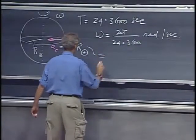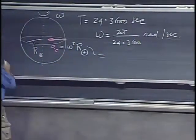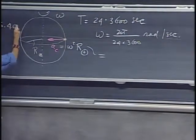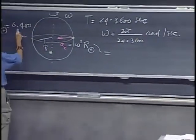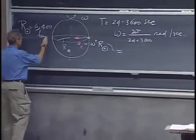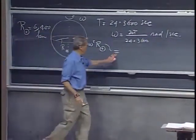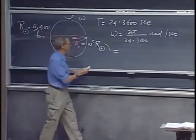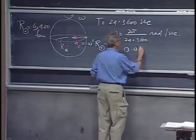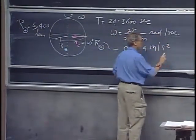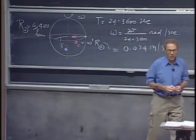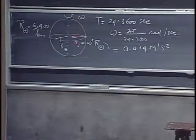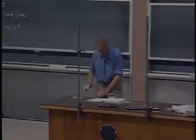You can now calculate omega squared times r_Earth, knowing that the radius of the Earth is about 6,400 kilometers — make sure you convert to meters. You will find that the centripetal acceleration at the equator, which is the worst case — it's less here — is 0.034 meters per second squared. This is 300 times smaller than the gravitational acceleration you experience here on Earth.